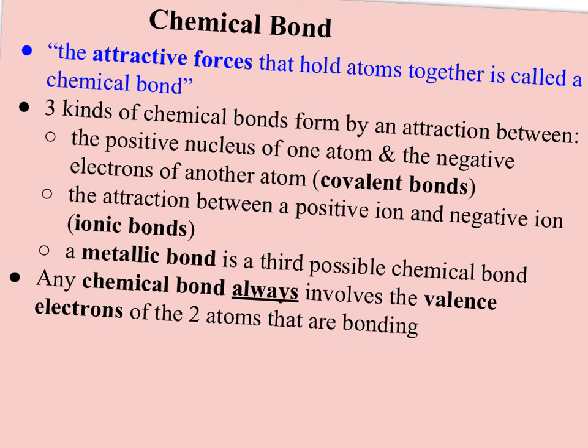Welcome. This video is going to talk about chemical bonds and the three different types of chemical bonds that can form among various atoms. A chemical bond is defined as the attractive forces that hold atoms together. There are three kinds of chemical bonds that form. There can be an attraction between the positive nucleus of one atom and the negative electrons of another atom, and that's called a covalent bond.